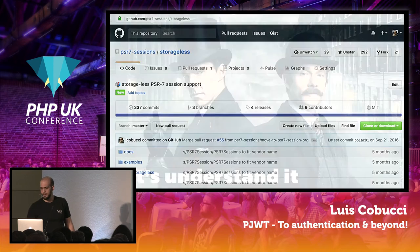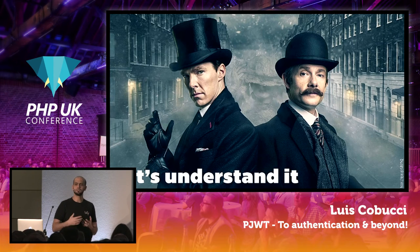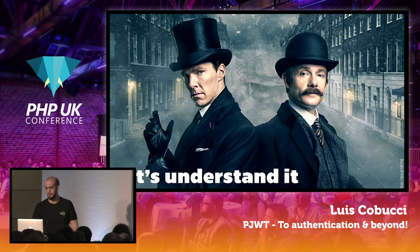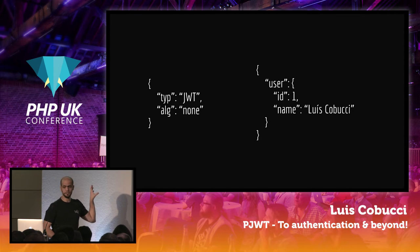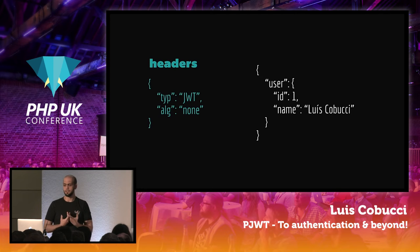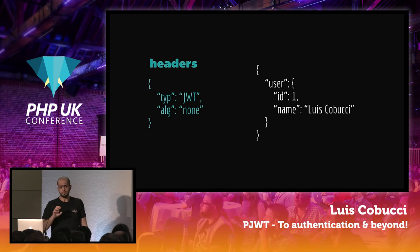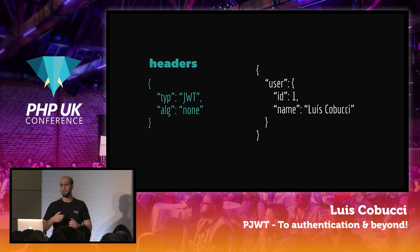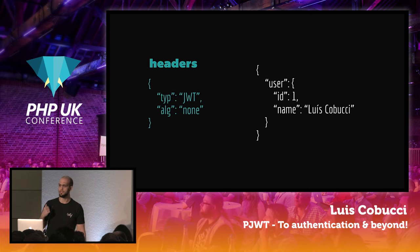Now that you have some ideas on how a token can be used, let's understand it better. As you saw, we had two JSON objects. The first one represents the headers. The headers basically have the information you need in order to decode that token — you will have a type, you will have an algorithm, you can have a key ID, as Adam showed in his talk yesterday.